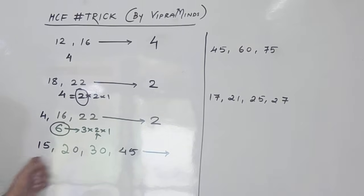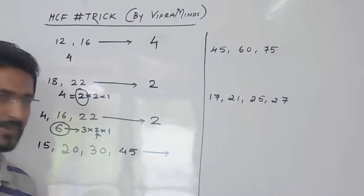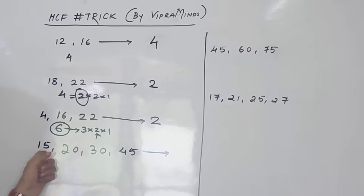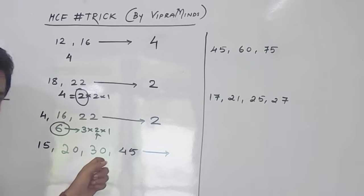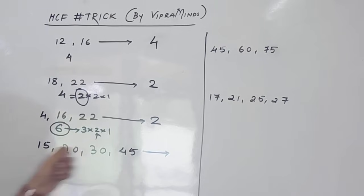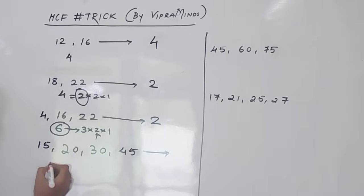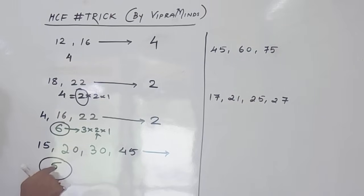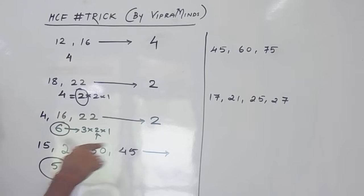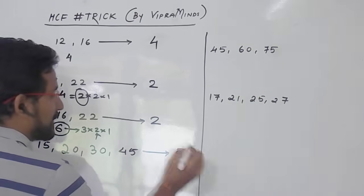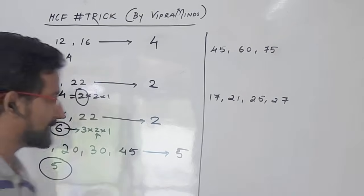Now we will see the next one. Again we have 4 numbers. We have to find the least difference between these 4 numbers. The difference between two of them is 5, between the next two is 10, between these two is 15, and another pair gives 30. So the least difference is 5. Now we check whether 5 is the divisor of all these numbers — 5 is the divisor of 15, 20, 30 and 45. So the HCF will be nothing but 5.